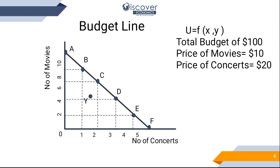Point Y tells us that you have consumed less than your budget. For example, you watched four movies ($40) and two concerts ($40), totaling $80 consumed with $20 remaining in your pocket. That means you have not achieved utility maximization. Utility maximization is achieved on points A, B, C, D, E, and F on the budget line — any of these points gives you the same level of utility, meaning you enjoy full consumption of your income.